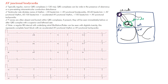Remember when we talked about junctional escapes — that means there may have been a problem and you had an escape beat. In this case we have a junctional rhythm, so the impulses are coming right from the AV junctional area going downward antegradely, and you may also have retrograde conduction to the atrium.